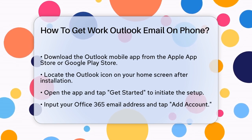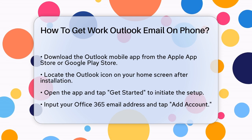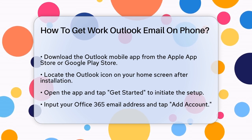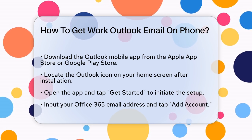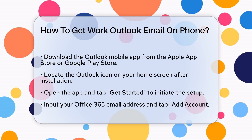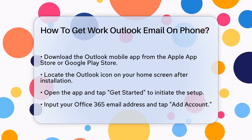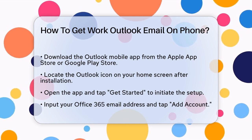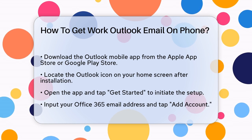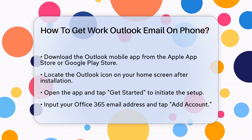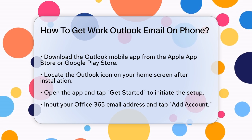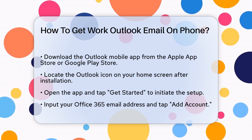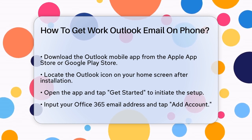First, you need to download the Outlook mobile app. If you have an Apple device, head to the Apple App Store and search for Microsoft Outlook. For Android users, go to the Google Play Store and do the same. Once you find the app, click the Install button to download and install it on your phone.